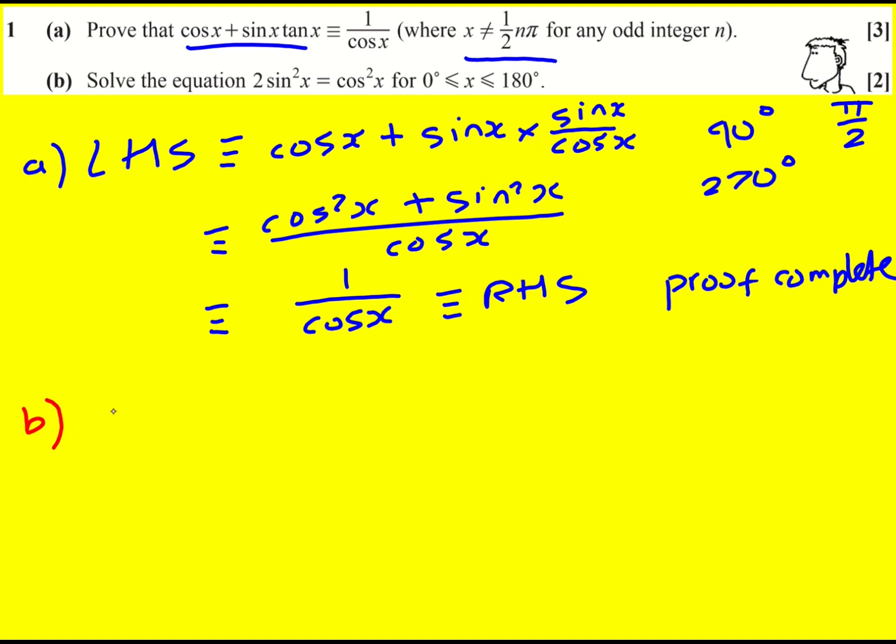In part b, we're asked to solve an equation just for 0 to 180 degrees. Okay, so what I'm going to do is divide through by cos squared, because then that will give me sin squared over cos squared, which is tan squared. And that will equal 1. It doesn't become 0. Cos squared divided by cos squared is 1. And then divide by 2 to get a half. You could divide by 2 first of all if you preferred.